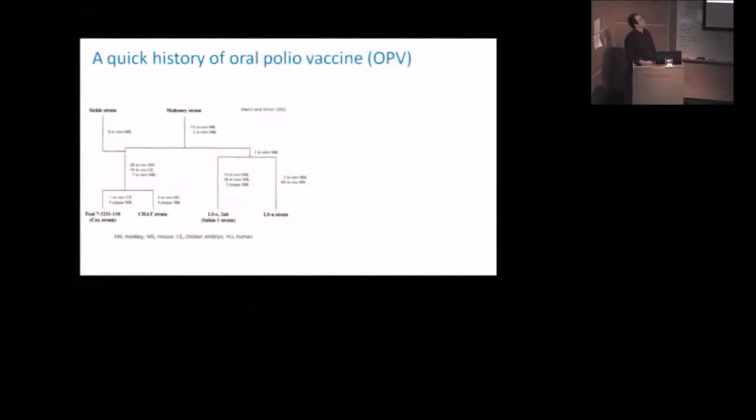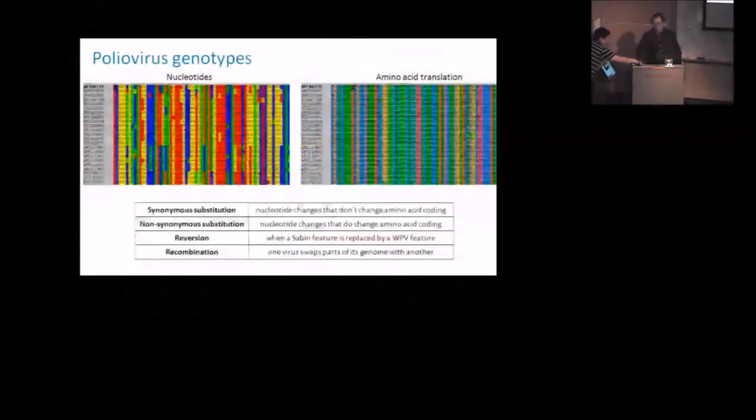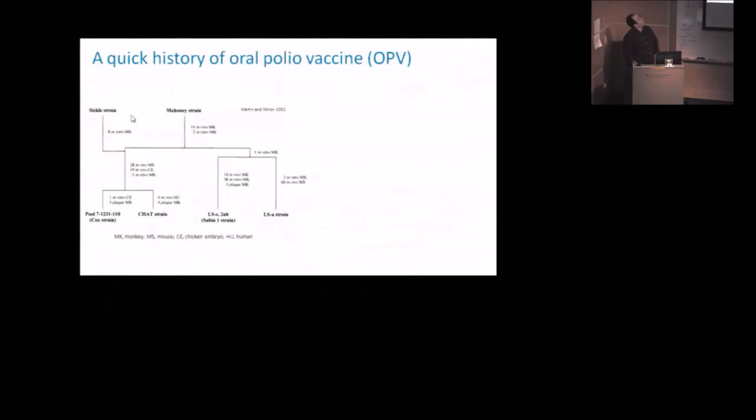So one of my favorite things that I learned when I got into this field is how did we get oral polio vaccine back in the 50s when we didn't really know much about molecular genetics. What I'm showing over here is a figure from a paper that talks about the history of a few different vaccines. What's going on here is on the top are two naturally occurring human poliovirus strains that were isolated at some point in the 1940s. So these are wild polioviruses frozen in amber in 1940. On the bottom are three different vaccine strains and a mouse-adapted strain over here that we don't need to talk about.